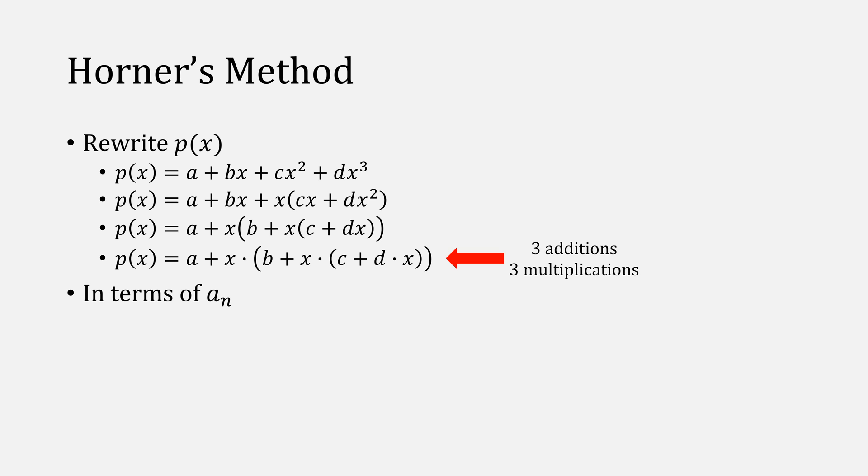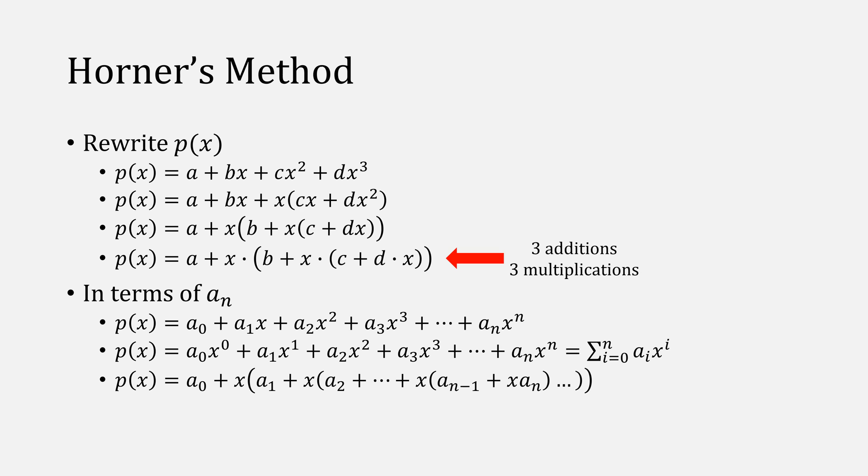If we write it in terms of a sub n, you could represent it normally like this, or rewrite it in terms like this. Recursively, it will look something like this.